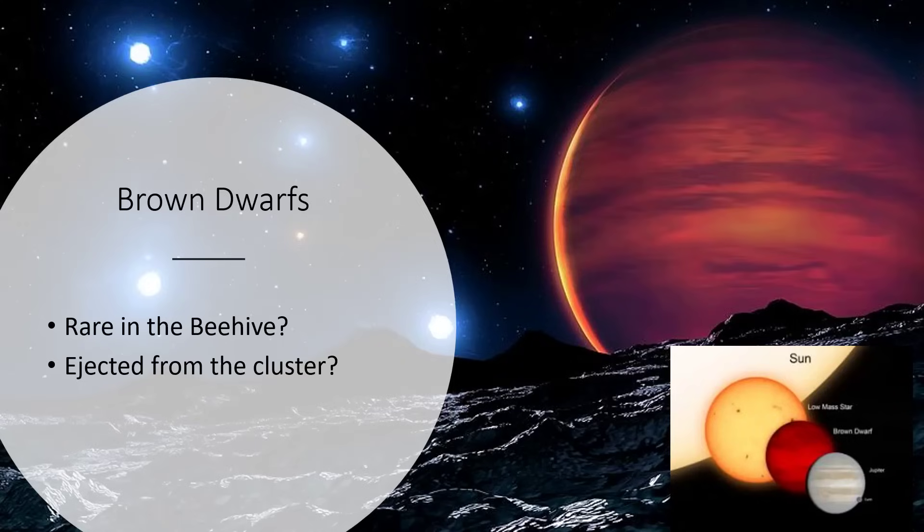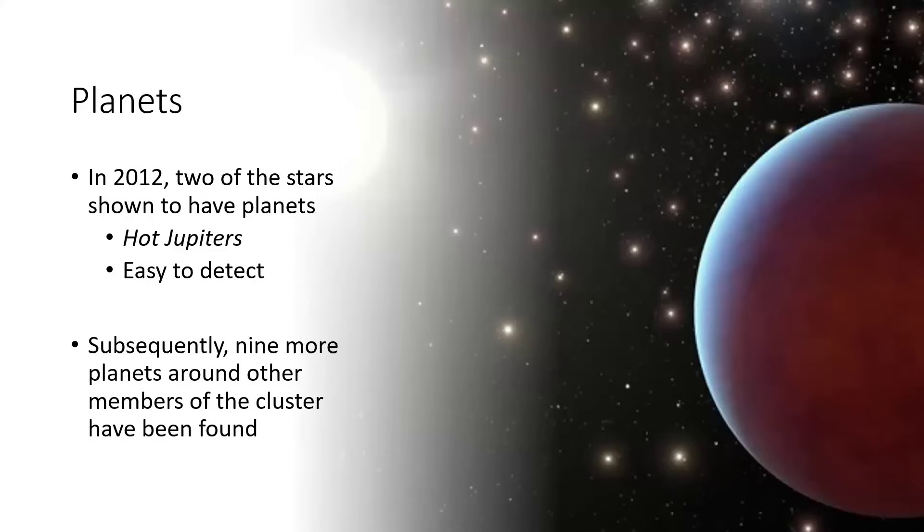They tend to pick up escape velocity and get kicked out. That's interesting because it means that open clusters probably form quite a lot of these brown dwarf stars and free-floating giant planets, but they all lose them very rapidly. So there should be a lot of them wandering around the galaxy.